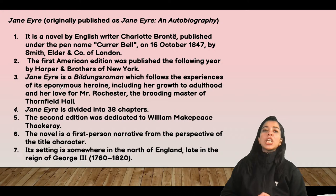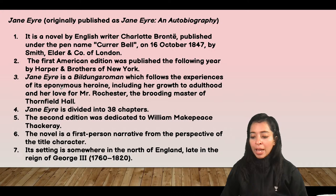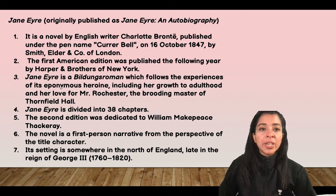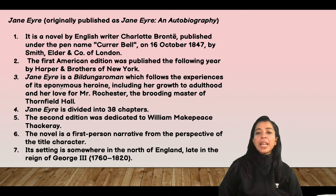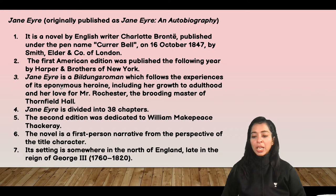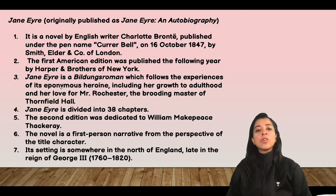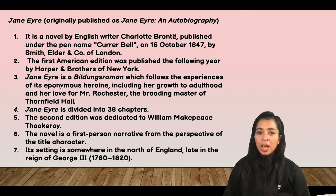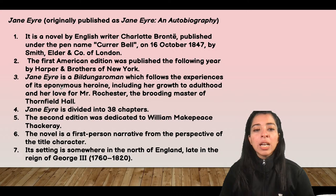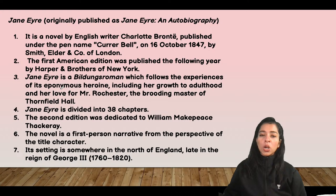Jane Eyre — full title Jane Eyre: An Autobiography — was published by Charlotte Brontë in 1847. The first American edition was published in New York by Harper and Brothers. It is a Bildungsroman, meaning a coming-of-age novel. It follows the experiences of its eponymous heroine — meaning the heroine's name is the title — including her growth to adulthood and her love for Mr. Rochester, the brooding master of Thornfield Hall. The novel is a first-person narrative set in the north of England, late in the reign of George III.